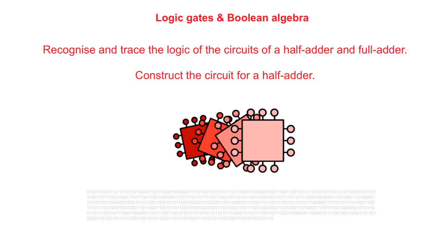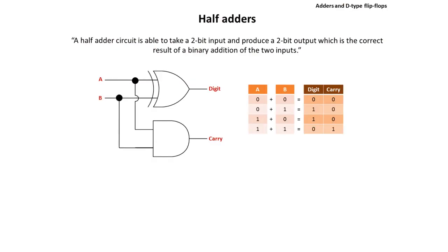In this video, we're going to take a look at the logic that is associated with half adders and full adders. A half adder is a circuit which is able to take a 2-bit input and produce a 2-bit output, which is the correct result of a binary addition of the two inputs. It works by connecting an AND and an XOR gate as shown here.